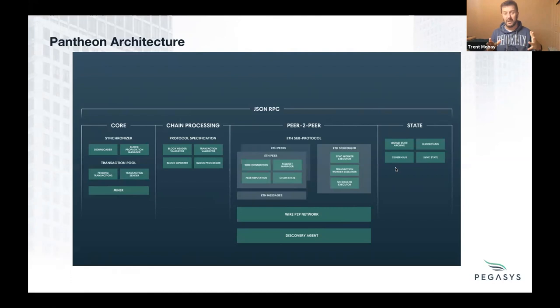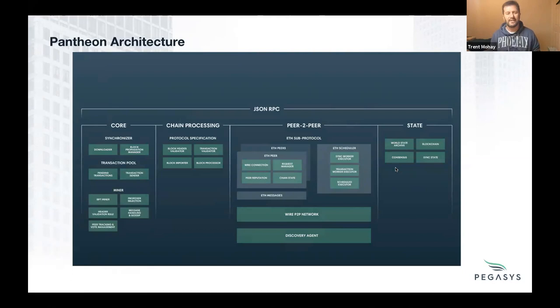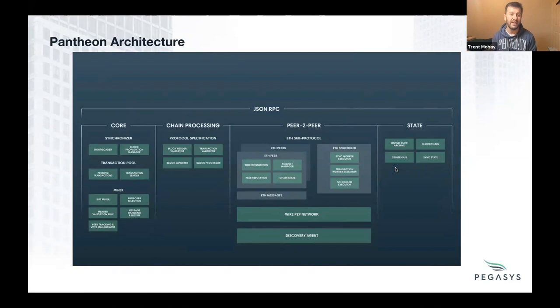One thing that makes me sad about that architecture picture is that there's no consensus mechanism written on it. But if we drill in, we can find it - that miner section of Pantheon is our consensus mechanism. For an IBFT2 miner, you can see concepts like the literal miner, proposal selection, message handling and gossiping, peer tracking and vote management, and header validation rules. Those are the main building blocks of an IBFT2 miner.